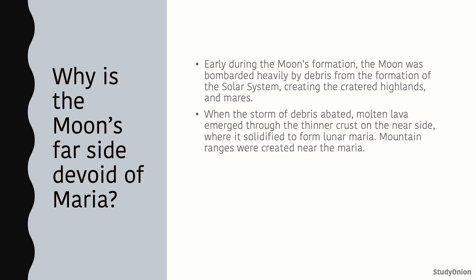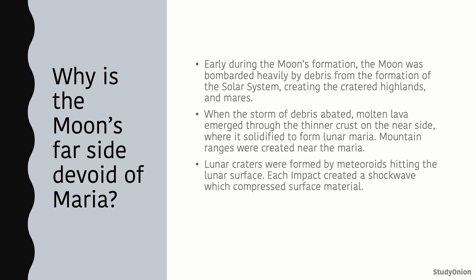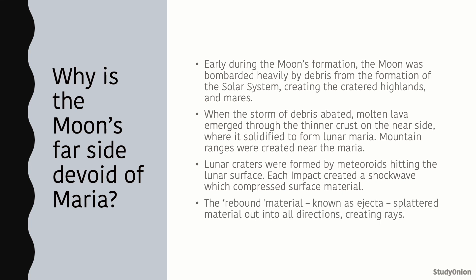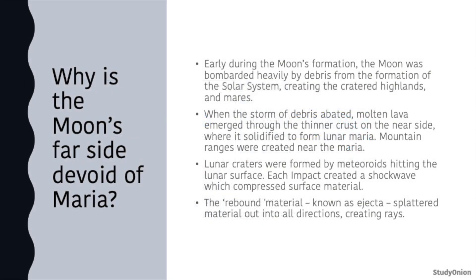Mountain ranges were created near the Maria. Lunar craters were formed by meteorites hitting the lunar surface. Each impact created a shock wave which compressed surface material. The rebound material, also known as ejecta, splattered material out into all different directions, creating rays.